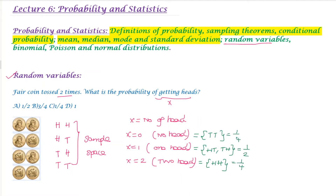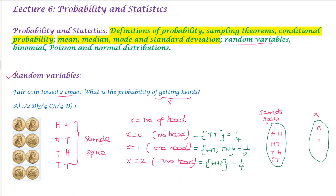The probability is represented by a mathematical function — that is a random variable. Here is the sample space: head-head, tail-tail, head-tail, tail-head. This function is used to connect the sample space with numerical values.